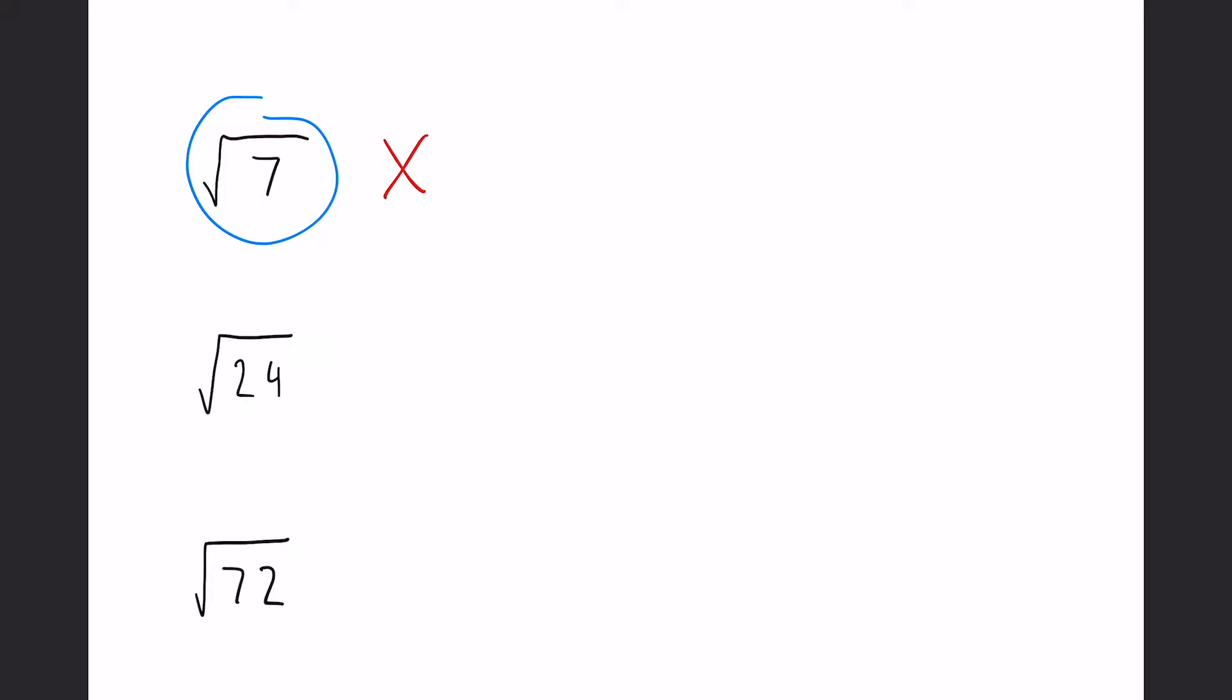Okay, 24 and 72 we can both simplify. What the simplifying actually involves is we need to find two numbers that multiply together to make 24, but one of them must be a square number.